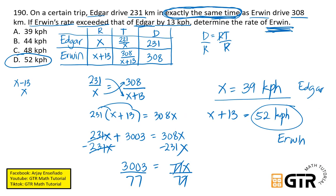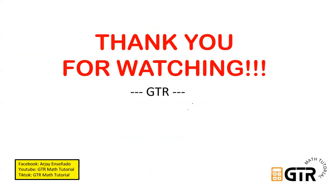So para another solution, para hindi kayo malito kung ano yung maging sagot nyo ay x na. So pwede natin palitan itong expression natin kay Edgar. Pwede siyang maging x minus 13. So Erwin naman ay magiging x. So same solution, 52 kph pa rin ang masasolv natin.